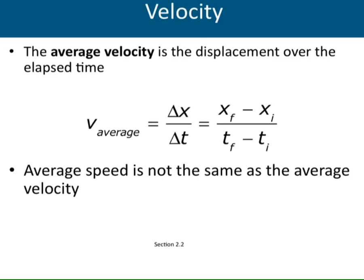Velocity is different from speed. The average velocity is defined as the displacement delta X divided by the total time delta T. To measure displacement, you need exactly two points: the initial position and the final position. Dividing the displacement by the time duration gives you the average velocity. In the SI unit system, since distances are in meters and time in seconds, the unit for velocity is meters per second.